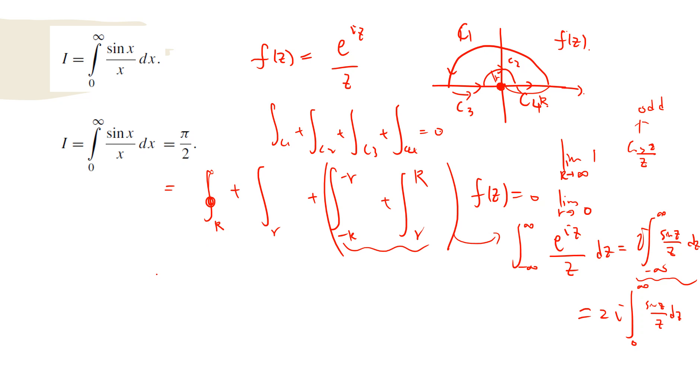And this is just 2i times the integral from 0 to infinity of sine z divided by z dz. So what we will get is 2i times the integral from 0 to infinity equals minus large R minus small r, taking R to infinity and small r to 0.